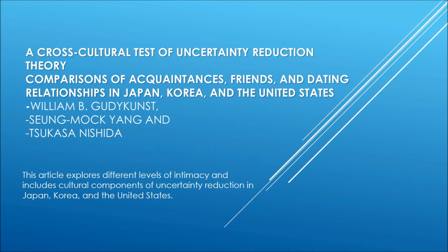A Cross-Cultural Test of Uncertainty Reduction Theory: The Comparisons of Acquaintance, Friends, and Dating Relationships in Japan, Korea, and the United States, provided by the referenced authors.